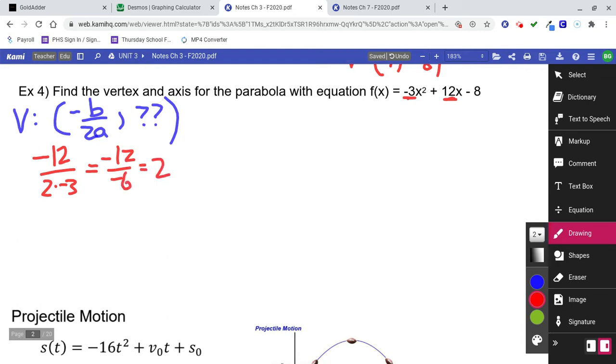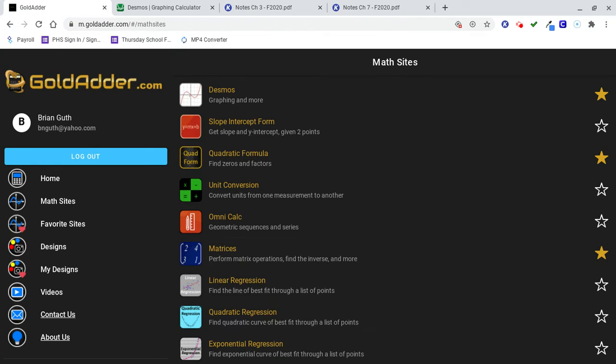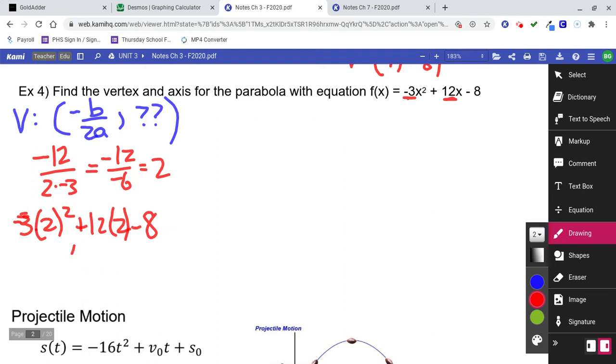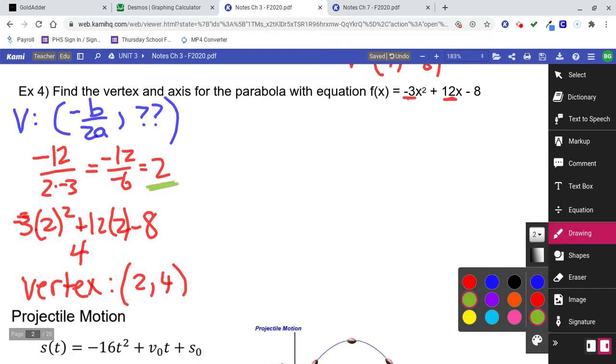I need to plug that in. So plug the 2 into the problem. We've got negative 3 times 2 squared plus 12 times 2 minus 8. If you can do that in your head or on paper, that's great. If you can't, then please use a calculator. If you use a calculator, please use parentheses. Negative 3 parentheses 2 squared plus 12 parentheses 2 minus 8 is 4. So however you do it, you're going to get 4 there. We know now the vertex is 2, 4. If you know the vertex is 2, 4, the axis is always just the x number. So the axis is x equals 2.